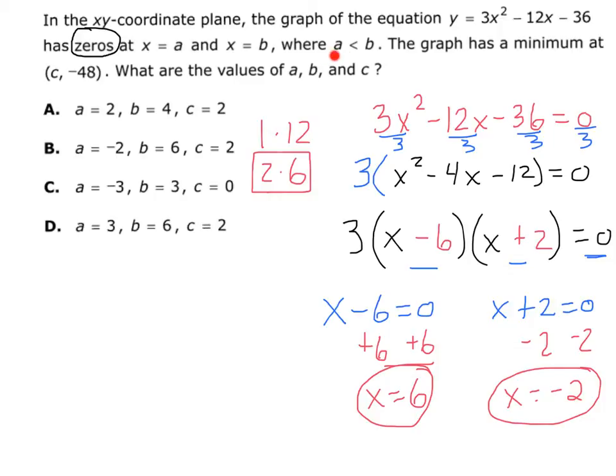Now right here it says a is less than b. So in this case, a is going to be the smaller number, which is negative 2, and b is going to be the bigger number, which is 6. So there's a, there's b,